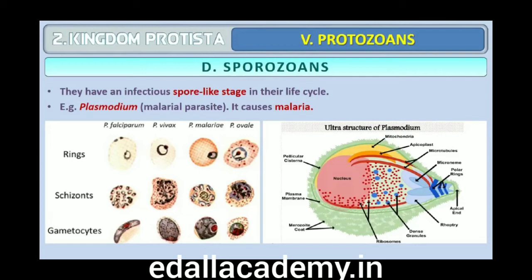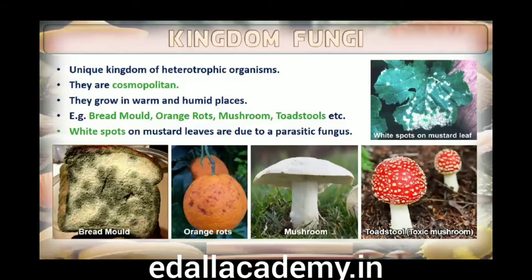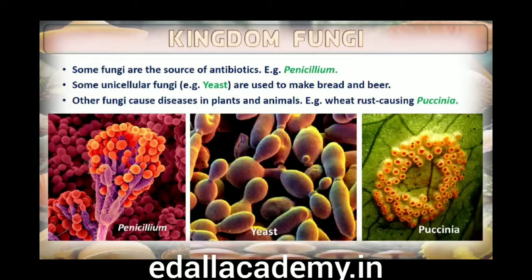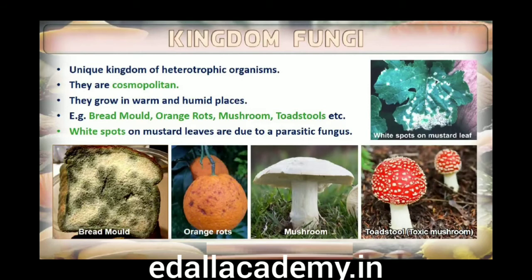2.3 Kingdom Fungi. The fungi constitute a unique kingdom of heterotrophic organisms. They show great diversity in morphology and habitat. When bread develops a mold or an orange rots, it is because of fungi. The common mushroom and toadstools are also fungi. White spots seen on mustard leaves are due to a parasitic fungus. Some unicellular fungi, for example yeast, are used to make bread and beer. Other fungi cause diseases in plants and animals — Trichophyton causing ringworm is an important example. Some are the source of antibiotics, for example Penicillium. Fungi are cosmopolitan and occur in air, water, soil and on animals and plants, preferring to grow in warm and humid places.